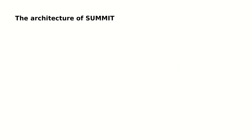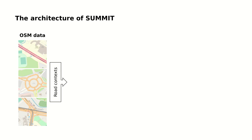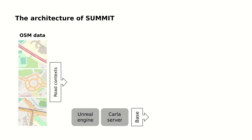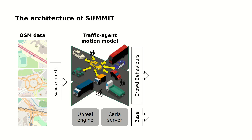The architecture of SUMMIT is as follows. It starts from using OpenStreetMap data of a real-world location to reconstruct the road context, interpreted as a lane network and a sidewalk network. Then, an urban scene is constructed by randomly spawning agents on its networks. We rely on the Unreal Engine and the CARLA server to realize low-level functions such as rendering, sensors, and physics. At a high level, we use a traffic agent motion model to control traffic agents and to simulate complex crowd behaviors.